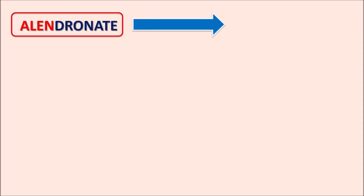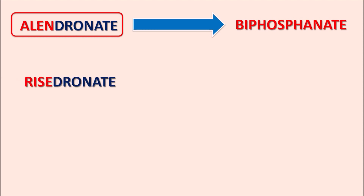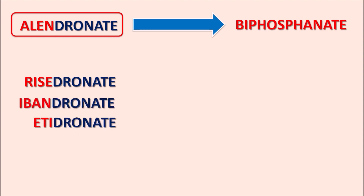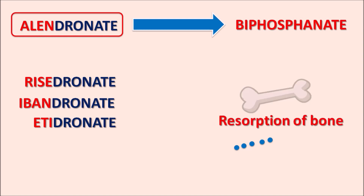Today we are going to discuss alendronate. The suffix '-dronate' indicates this drug is a bisphosphonate. We have few drugs with similar suffix within this category, such as risedronate, ibandronate, and etidronate — all these drugs are bisphosphonates. They are particularly used to treat osteoporosis, where they affect bone demineralization. Minerals like calcium and phosphate can be removed, reducing bone strength and increasing risk of fractures. Bisphosphonates inhibit this bone resorption, thereby improving bone density and reducing the risk of fractures.